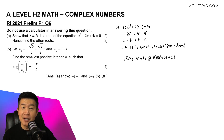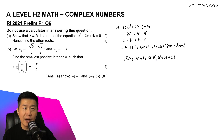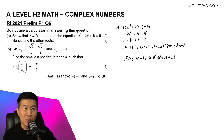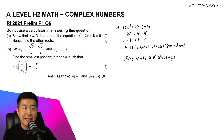We can use long division or observation. From observation, a must equal 1, because the coefficient of z³ on the left is 1, and on the right the only way to get z³ is by multiplying z by z², so a = 1. To find c, the constant term on the left is 4i. So (−2i) × c = 4i, which means c = −2, since (−2i)(−2) = 4i.